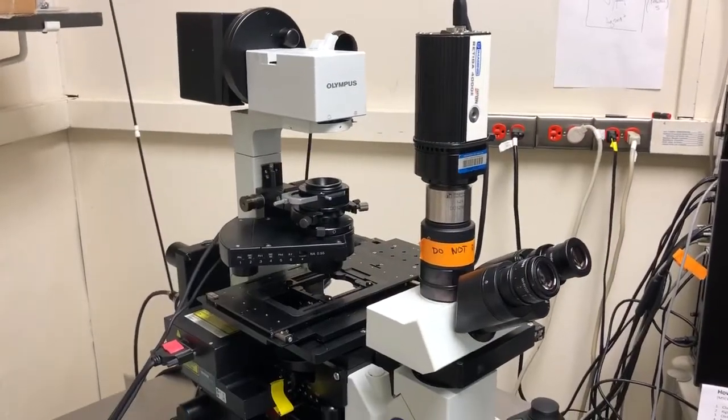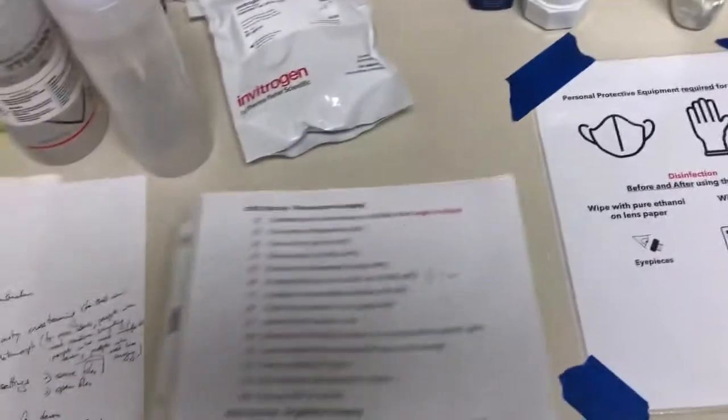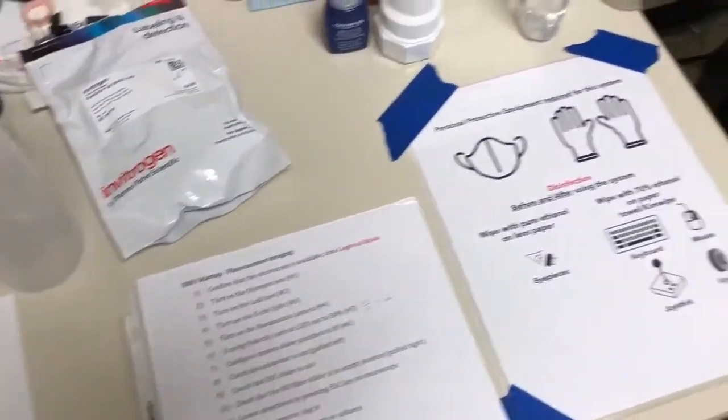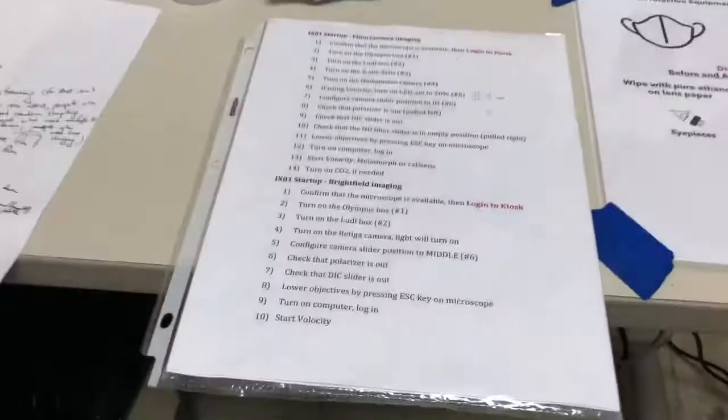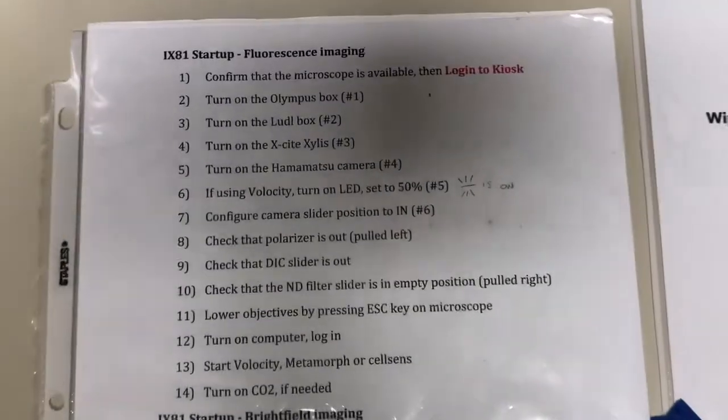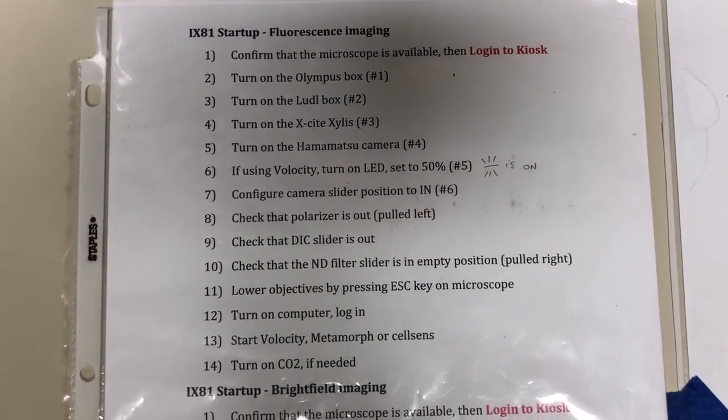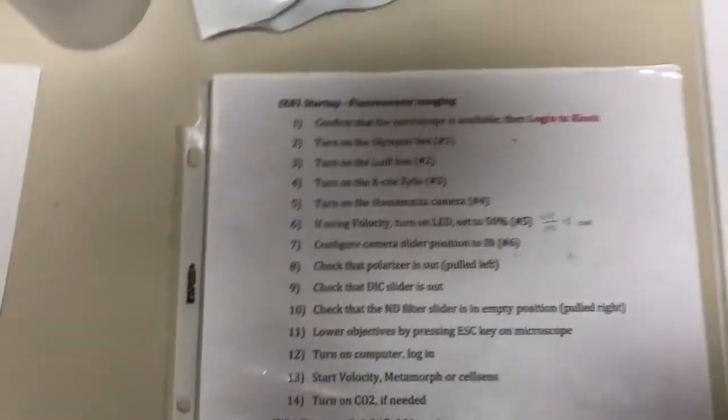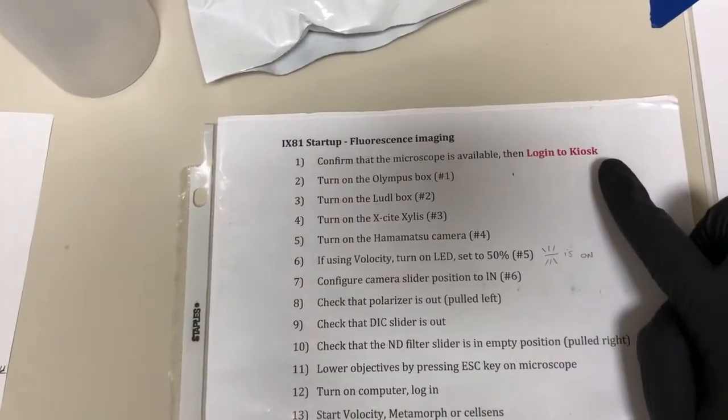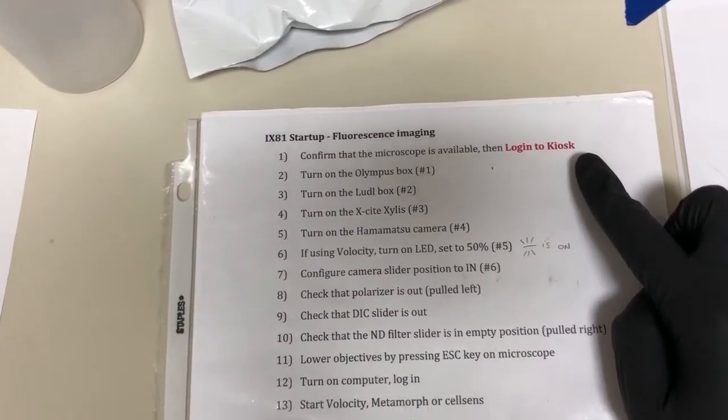The microscope is now disinfected and ready to use. The startup instructions are always going to be typically either on this table or on that table below the monitor or on top of the computer. So wherever they are, you just have to decide whether you're going to do bright field imaging or fluorescence. Today we're focusing on fluorescence and then follow the instructions for startup there. First step is to confirm that the microscope is available and log into the kiosk. I've already done that off camera.